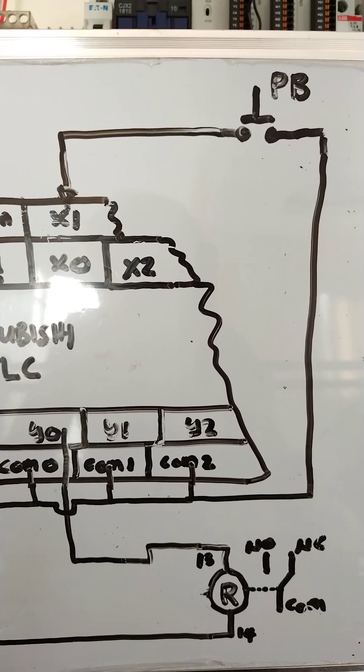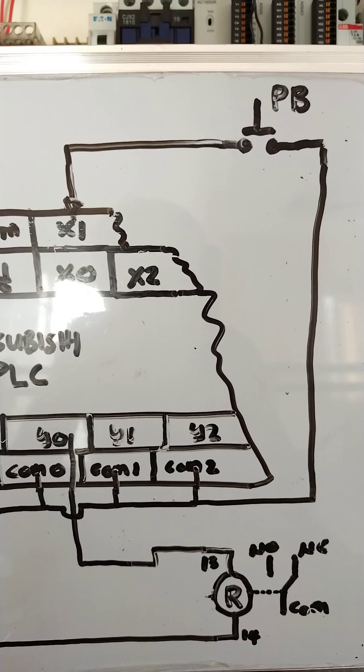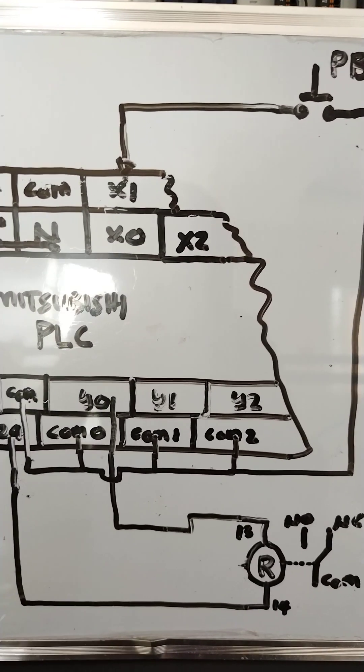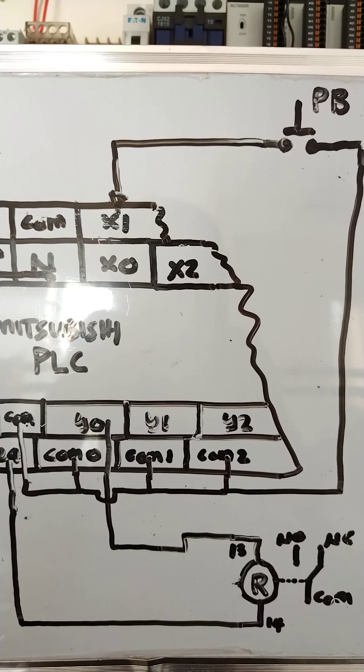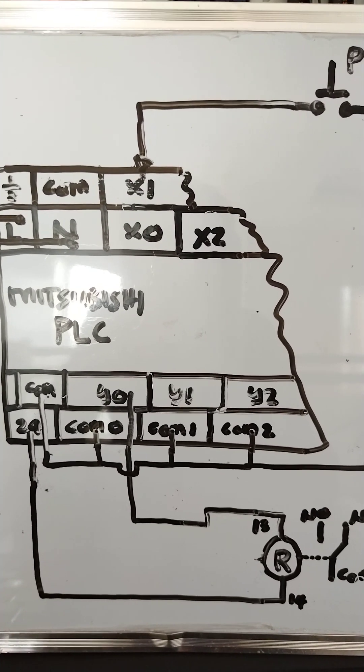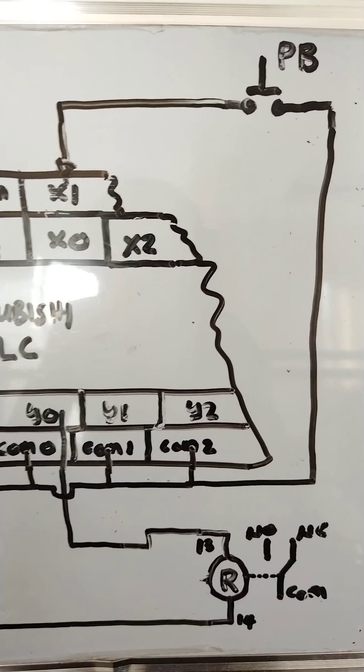Okay, so that like this one, I've shown you one push-button switch. Let's say that is a start, then the negative 24 volts will be injected to your input terminal like X1. So this is how you are going to wire the input.